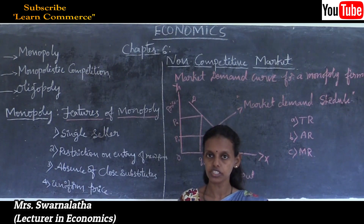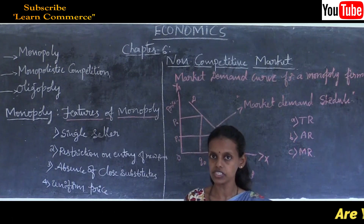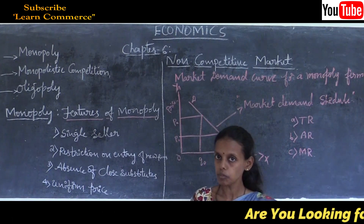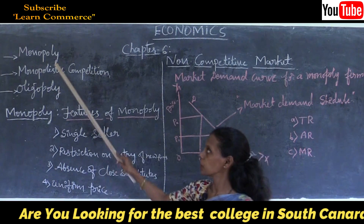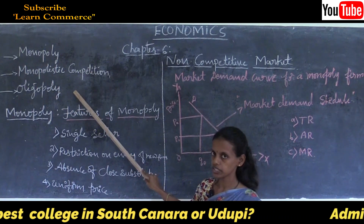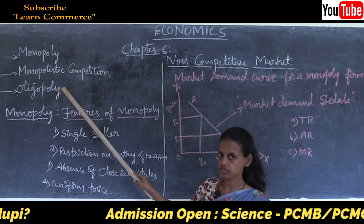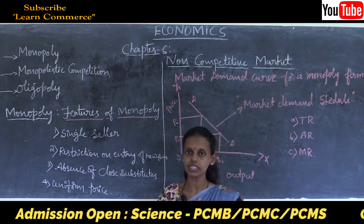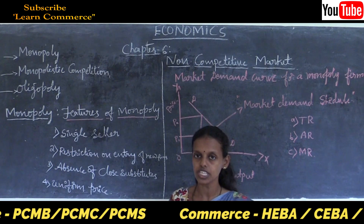In the previous chapter we discussed the theory of the firm under perfect competition, and in the fifth chapter we discussed market equilibrium. Now we are going to discuss the sixth chapter - non-competitive markets. The topics to be covered are monopoly, monopolistic competition, and oligopoly. Chapter six is built on the background given by chapter four.